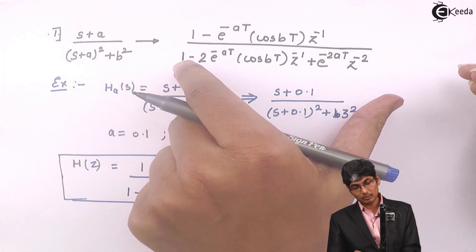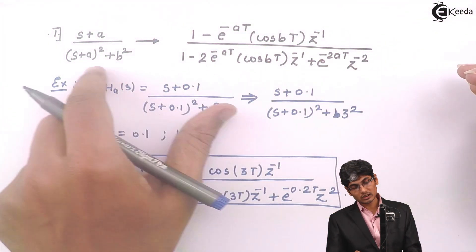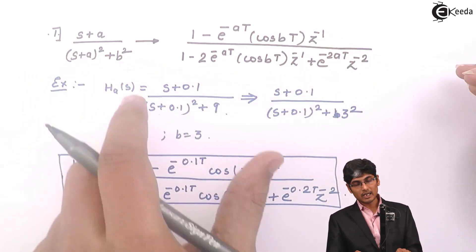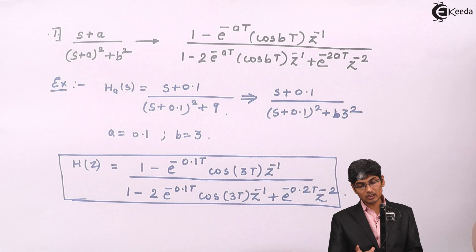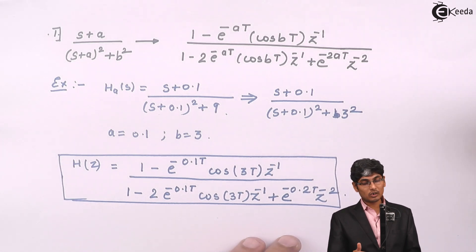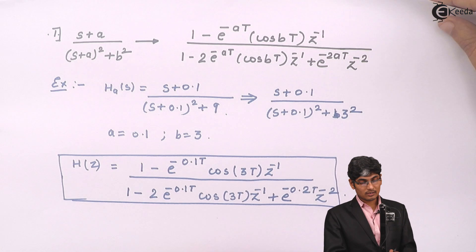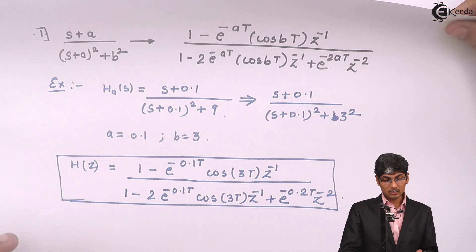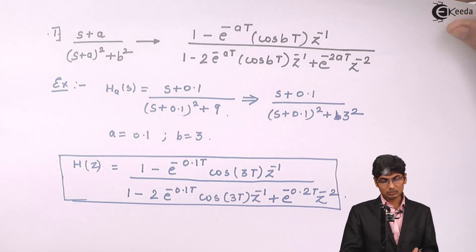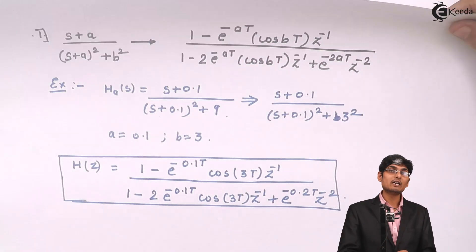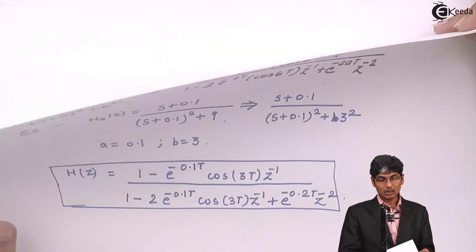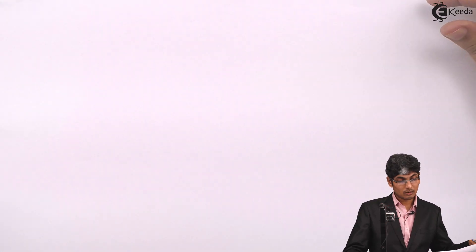In exams, please mention this formula and then directly substitute — that will give the examiner a clear view that you have understood the method correctly. This was the first generalized formula: if you get any example of this form, you can directly write H(z) without solving a large cumbersome equation.